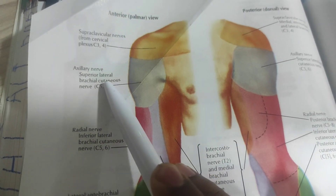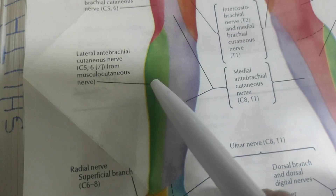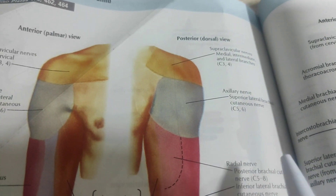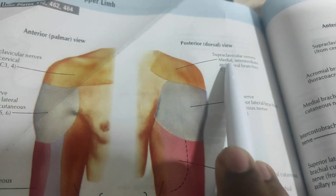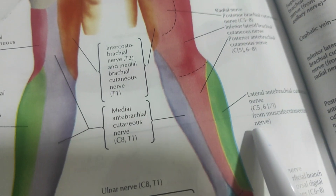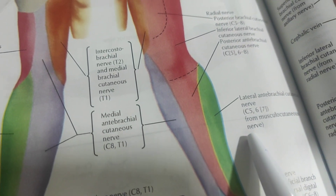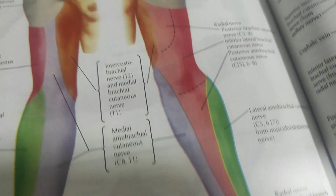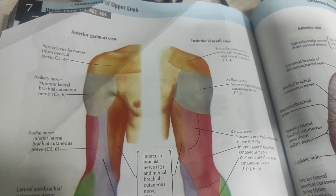Nerve supply includes the axillary nerve at C5 and C6, the radial nerve, lateral antebrachial cutaneous nerve, and radial superficial branch. From the posterior view we have the supraclavicular nerve, axillary nerve, radial nerve, and lateral antebrachial branch, which together supply the entire arm.